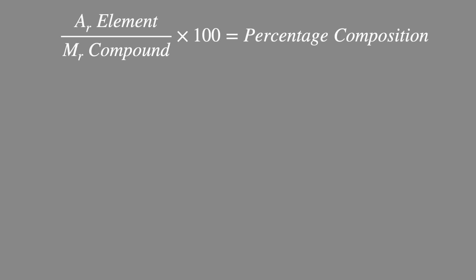We use this equation where we take the AR of the element and divide it by the total MR of the compound, then multiply it by 100.